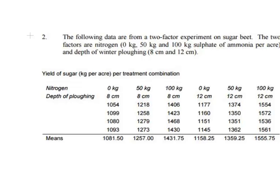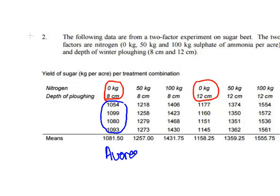Here are the measurements for each case. We have six possible combinations of our levels: 0 kg at 8 cm, 0 kg at 12 cm, and so on — three by two gives six combinations. With each combination there are four measurements — four independent replicate measurements. For the first combination, 0 kg at 8 cm, we have four measurements: 1054, 1099, 1080, and 1093.